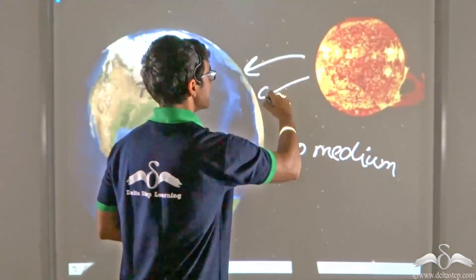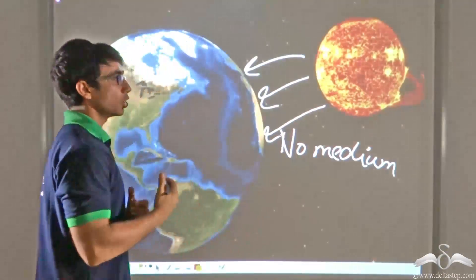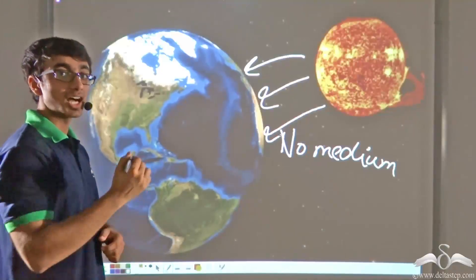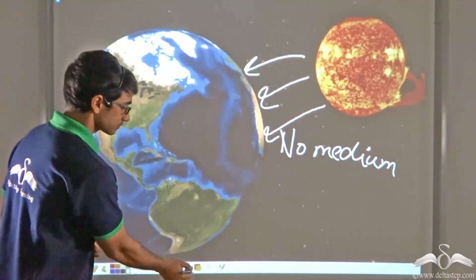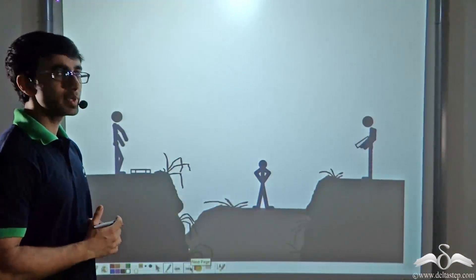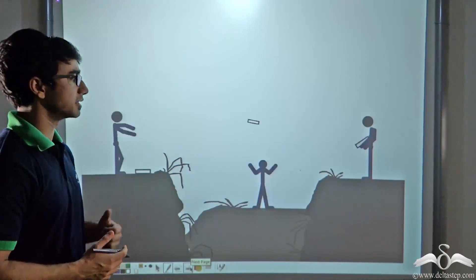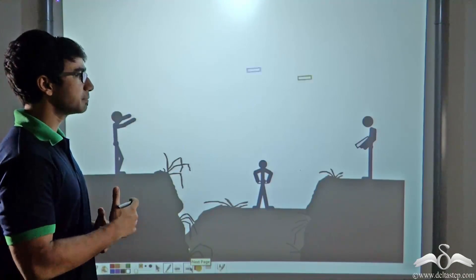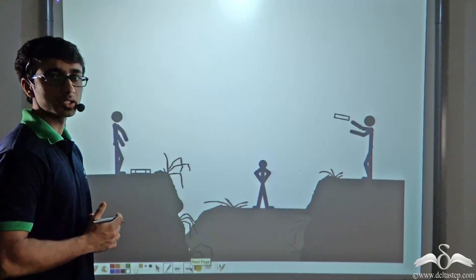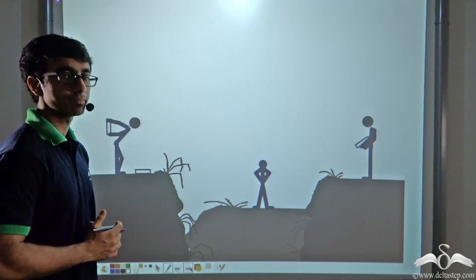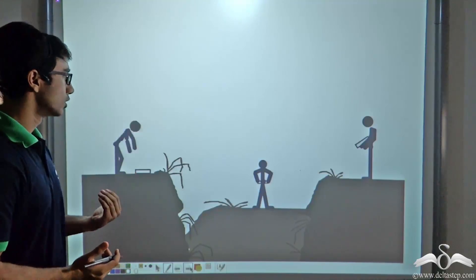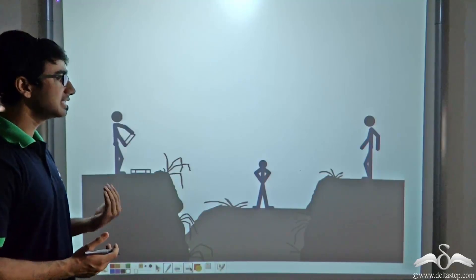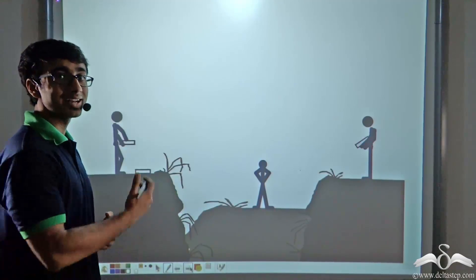How is it that people on earth are feeling warm when the heat is coming from the sun? Let us answer that question. Now before we answer that, consider this animation. In this animation you will find that there are three people who are standing apart from one another with no direct contact, and the person on the left who has an excess of parcels is transferring these parcels to the people who are in lack of it.